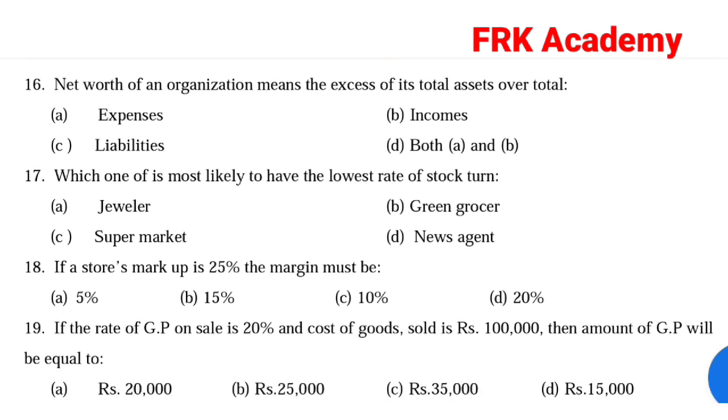Question 14: Which one is most likely to have the lowest rate of stock turnover? Answer: Option A, jeweller. A jeweller typically has the lowest rate of stock turnover.